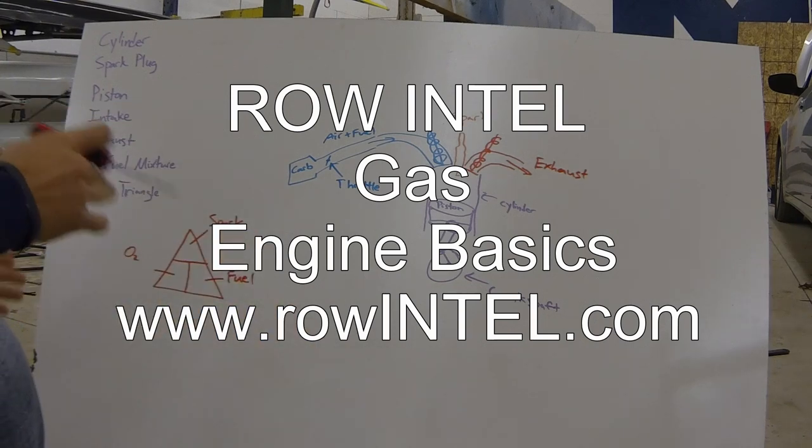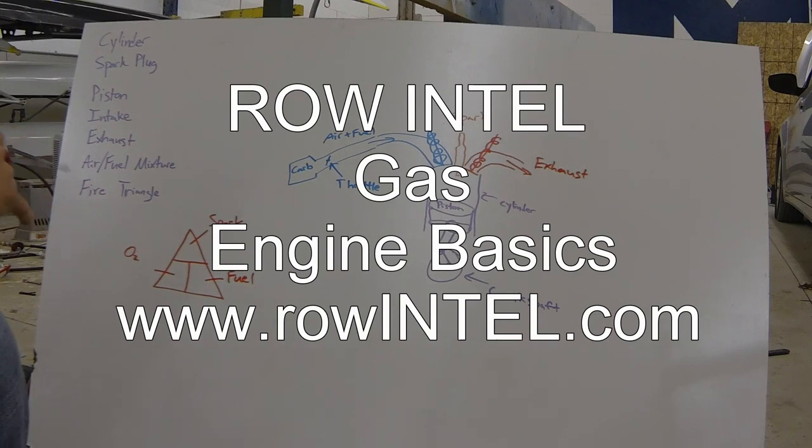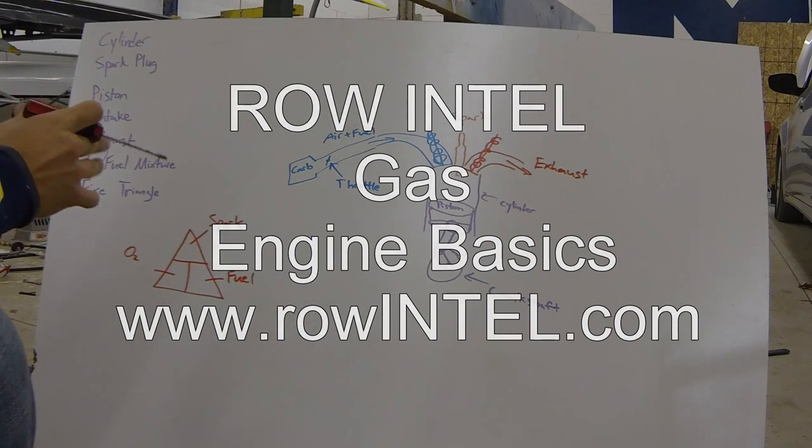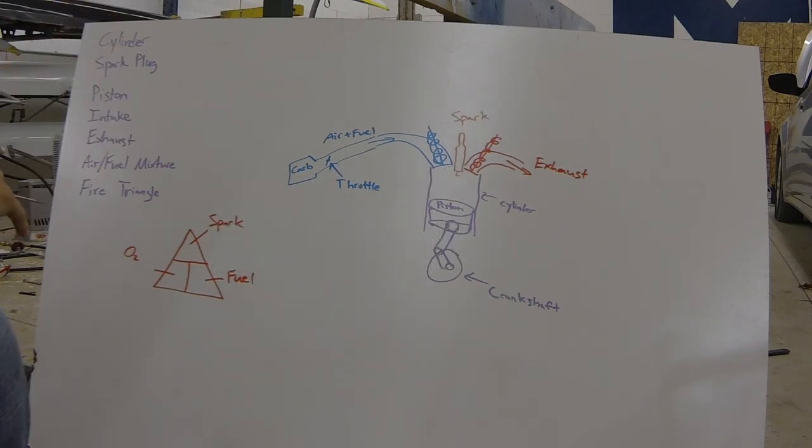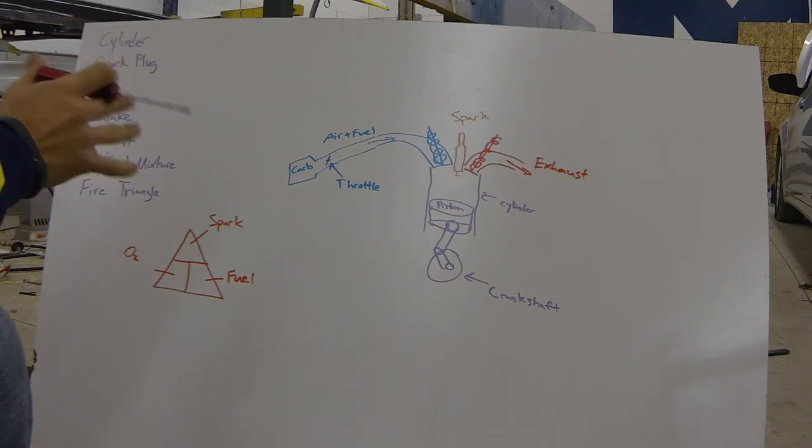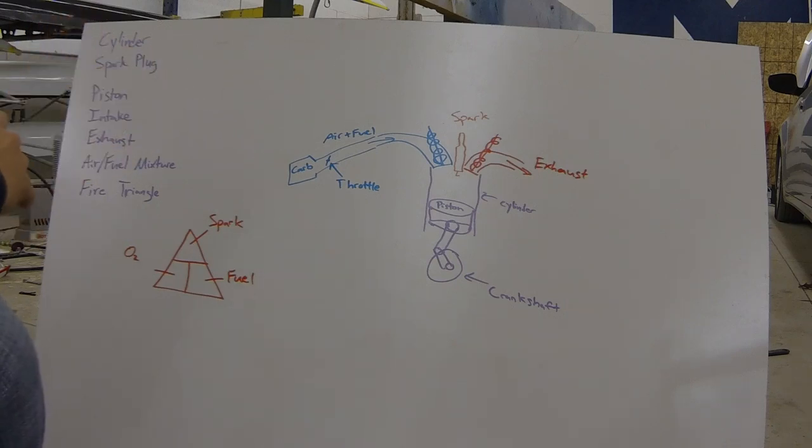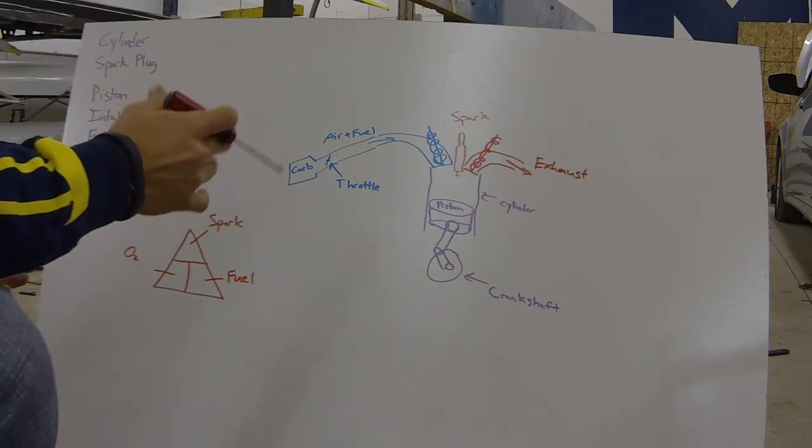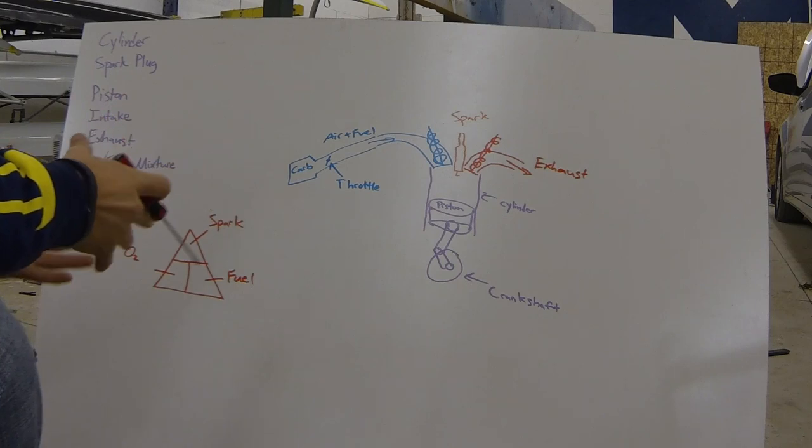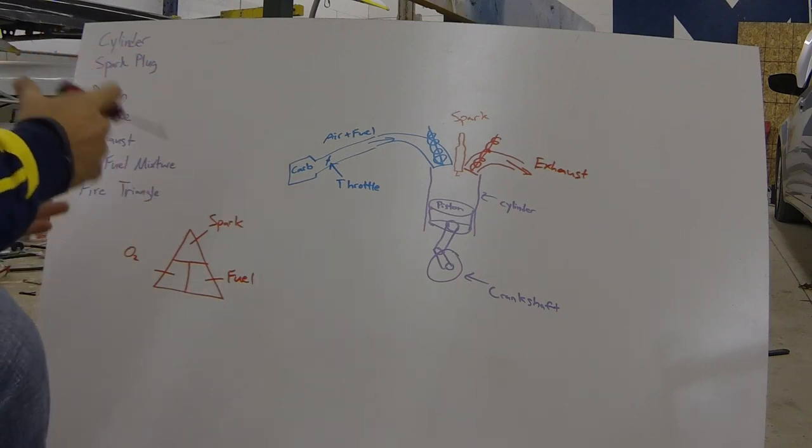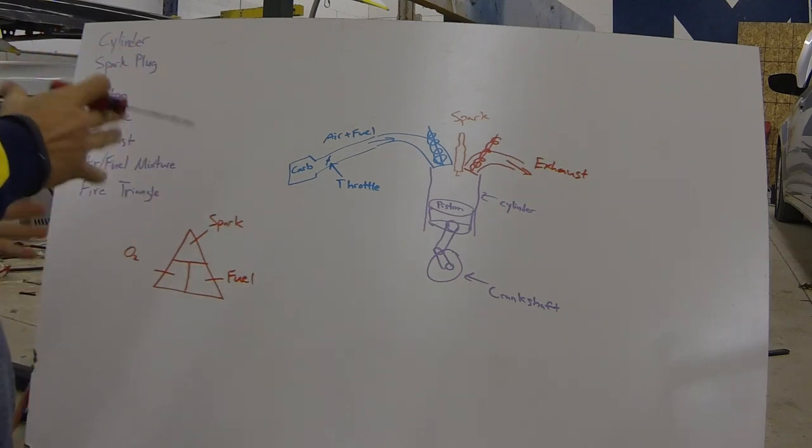So today we're going to talk about the very basics of how an engine works. If you've already had some mechanical background, this might be very basic information for you, but this is for our novices that haven't really ever worked on a motor and are kind of curious what makes a motor work. Any outboard motor has this setup, any small engine is just like this, and even your car and big trucks—they all operate on the same principle, they all have the same basic parts.